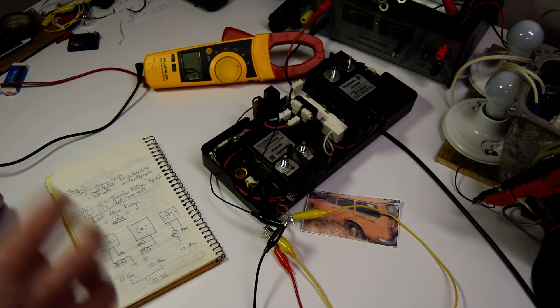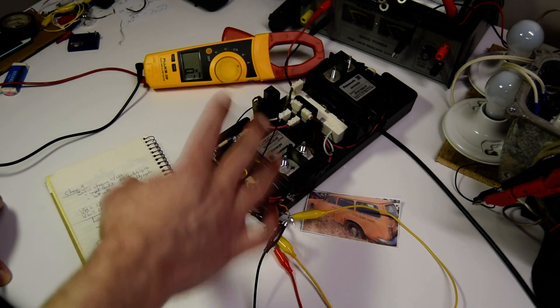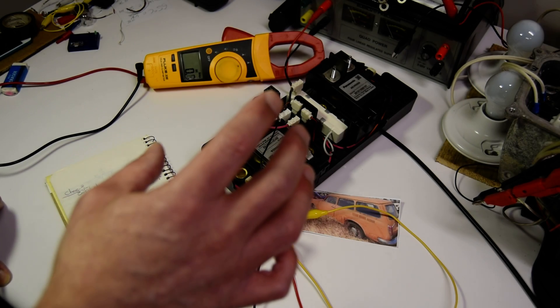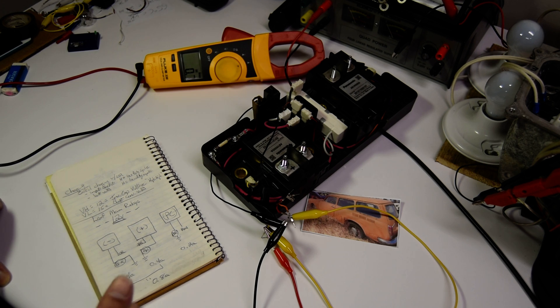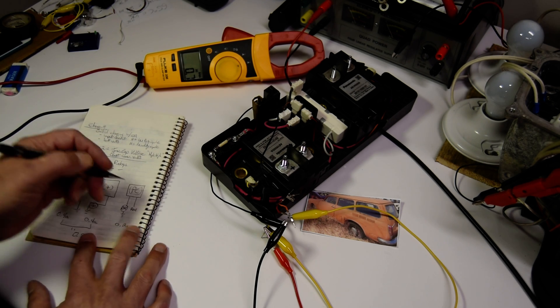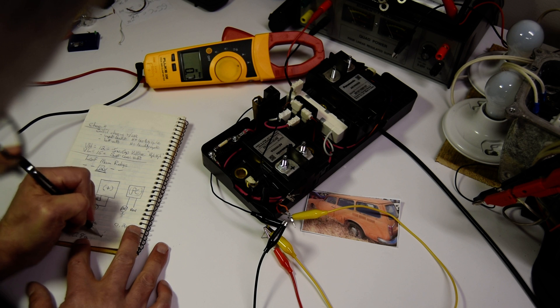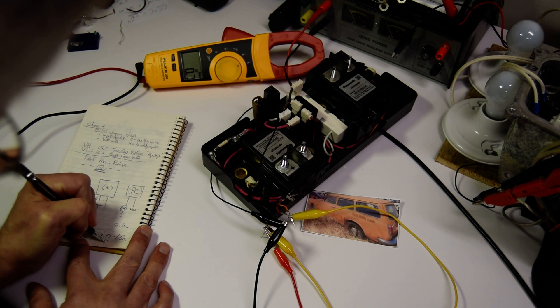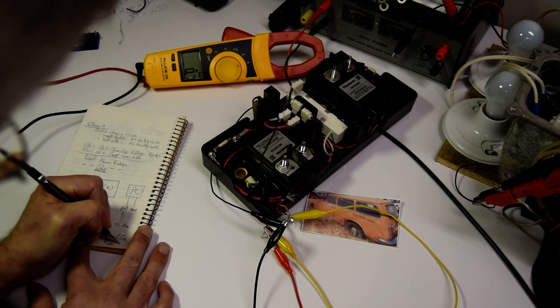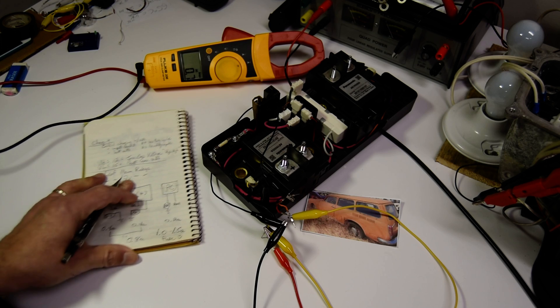That way, if anything really bad happens and something shorts out to something, I'll blow the fuse instantly. I don't want to put a 5 amp fuse in there. I want to put the absolute smallest fuse I can on these circuits. So with 0.8, I'll have a 1.0 to 1.5 amp fuse.